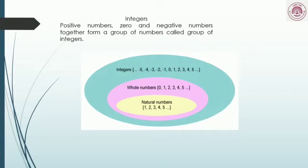The first set of numbers we learned is the natural numbers: 1, 2, 3, 4, and so on. When you include 0 in the group of natural numbers, you get the set of whole numbers. When you add the negative numbers to whole numbers, you get the group of numbers called integers.